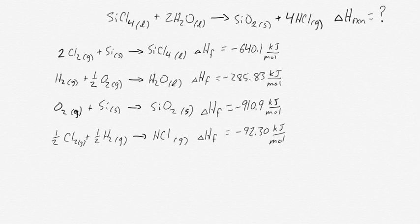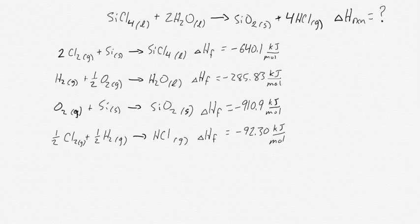Now that we've got all of our equations written, we have to decide how to rearrange them so that we can add them together to get our overall equation. The way we do that is we look at the overall equation first, and for each of those components, we determine where that component shows up in the individual equations. For example, SiCl4 is in our overall equation and it's also in equation number one, so we have to decide how to rearrange that equation so that SiCl4 ends up in the correct location and in the correct amounts.